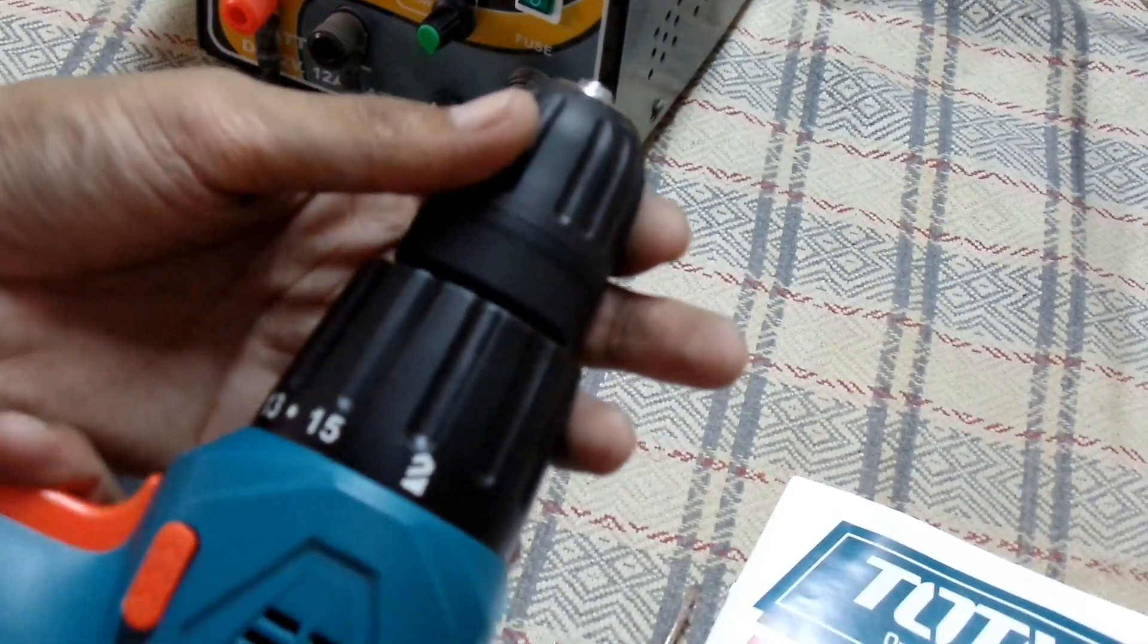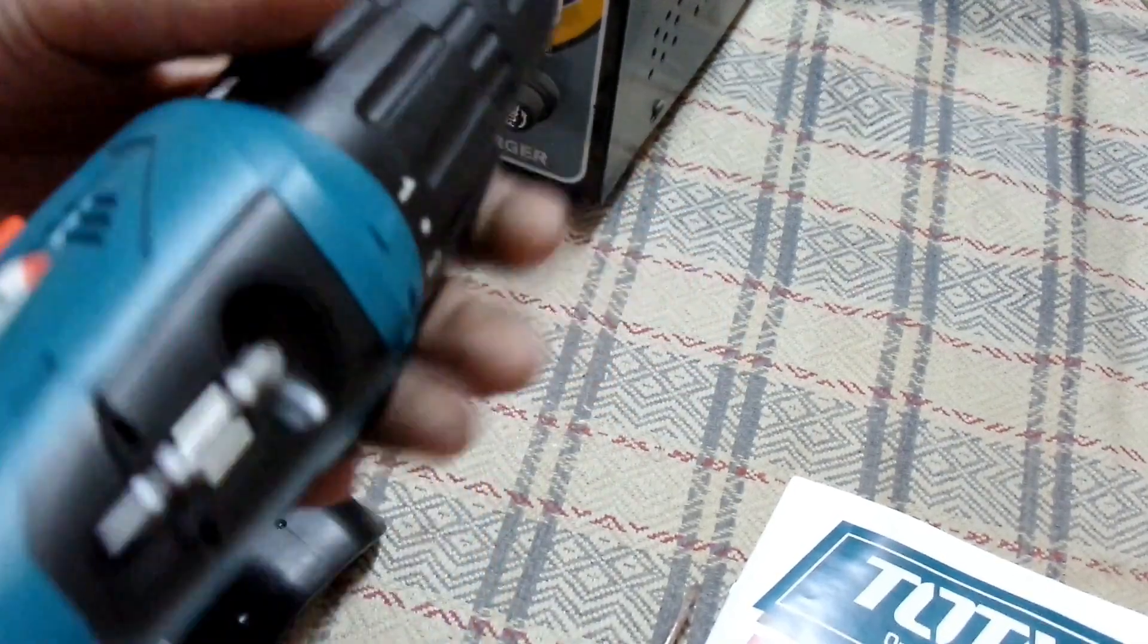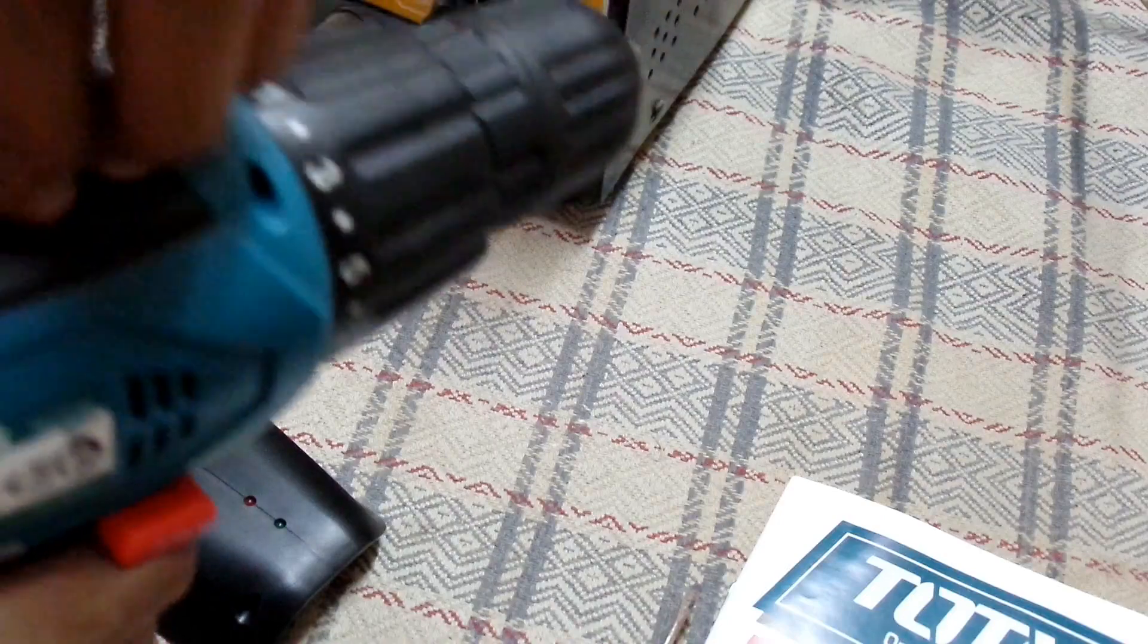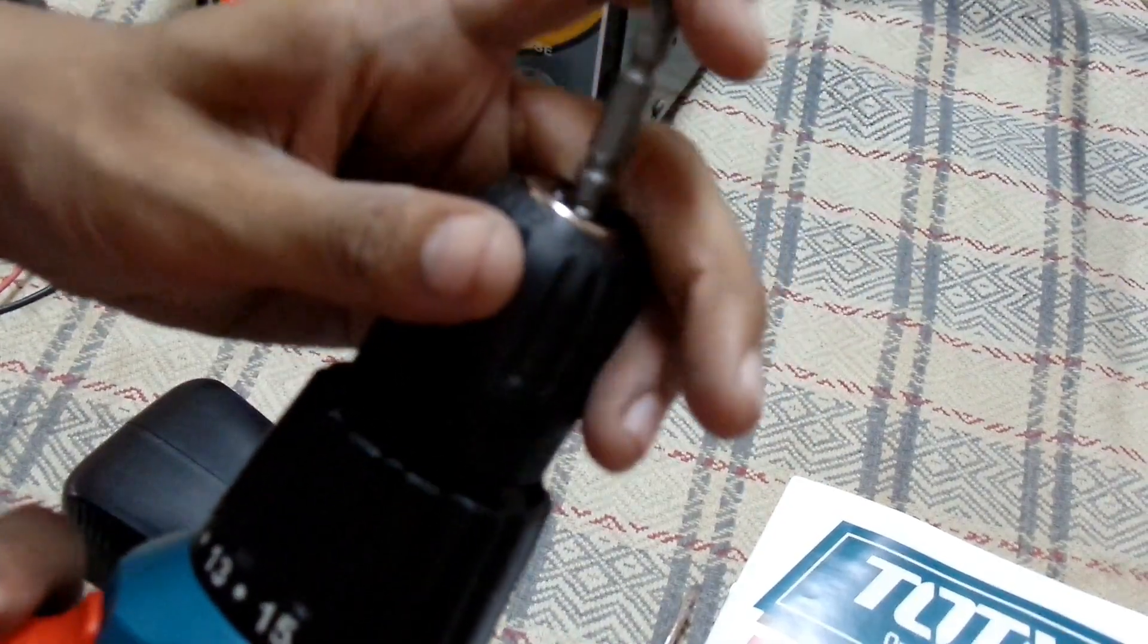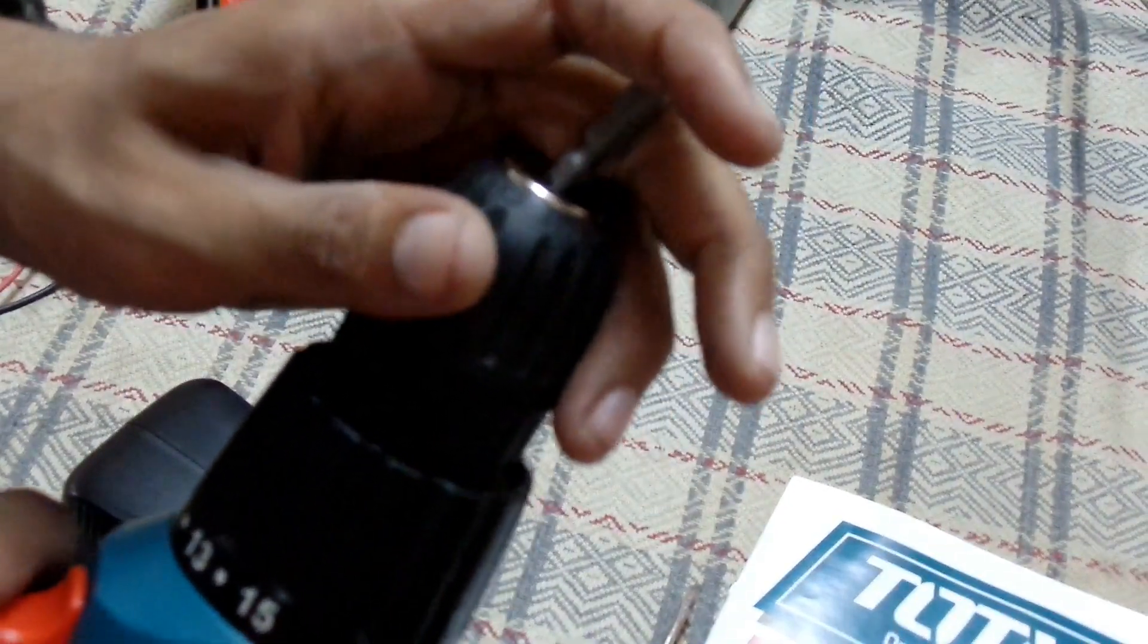The chuck can support about 10 millimeter bits. They also give free bits for the screws, the star bits, and the flat screwdriver.